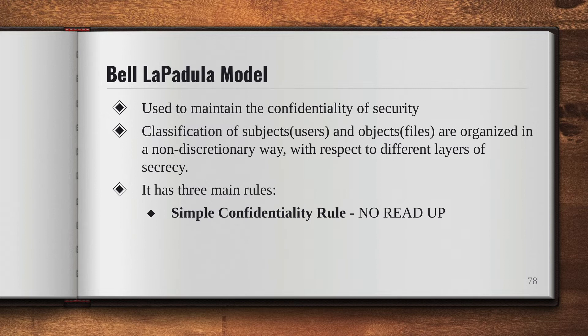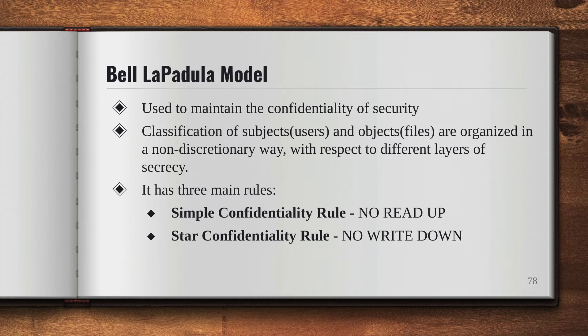The second rule is the Star Confidentiality Rule, which states that you can write on the same level as well as on the upper level, but you cannot write down. So you can only write on the same level of secrecy and the upper level.